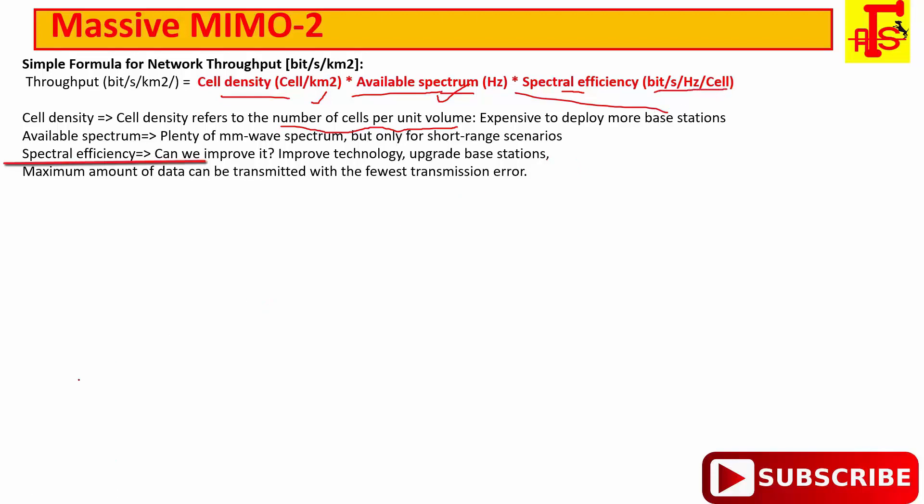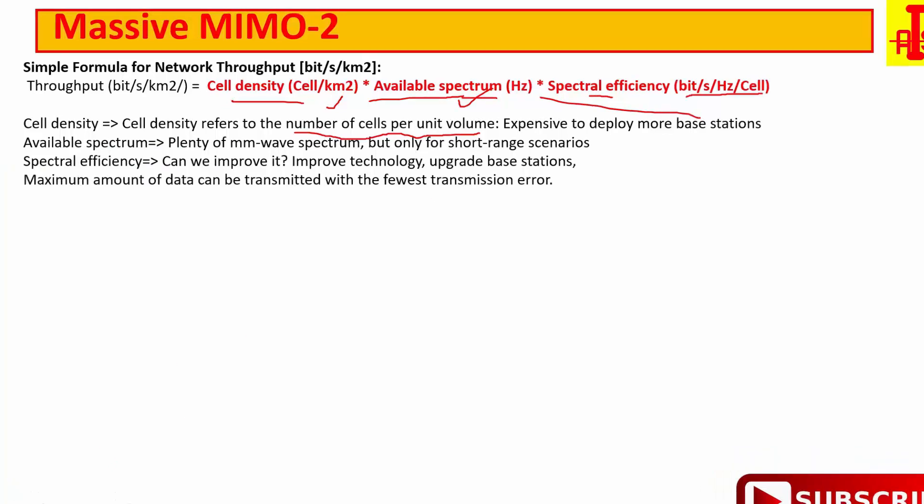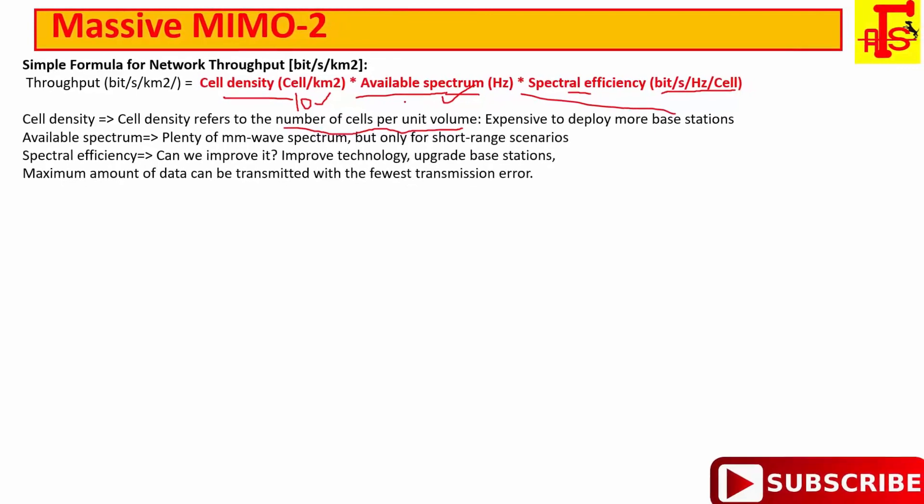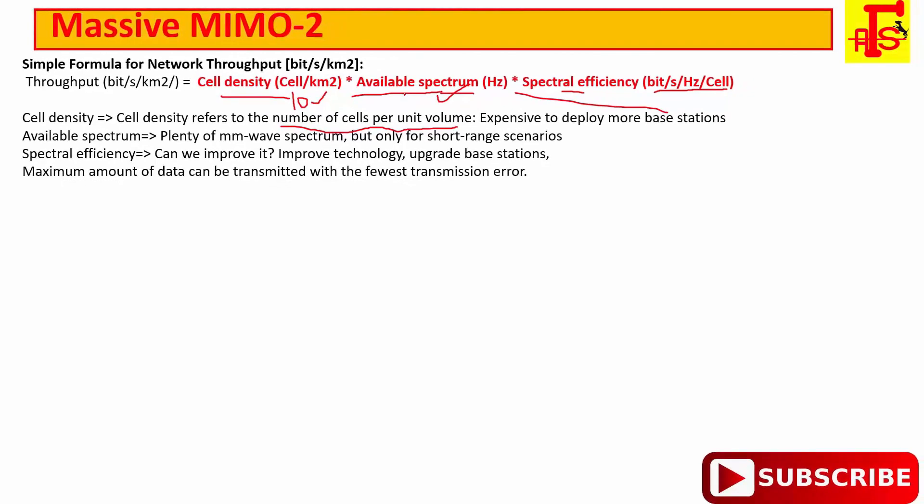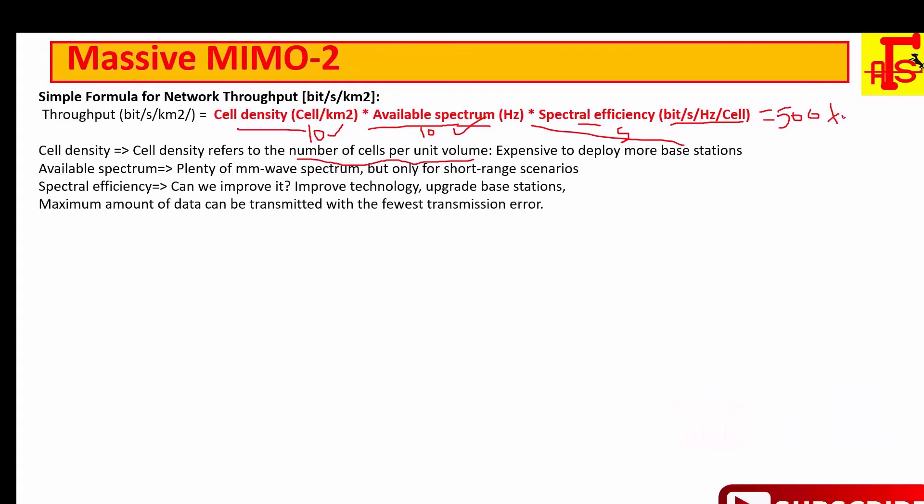Next is spectrum efficiency, bit per second per hertz per user. If number of antennas will increase, spectral efficiency also will increase. As per this formula, if we calculate the throughput in 5G, if suppose that available spectrum is increased by 10 times and the cell density will also be increased by 10 times and the spectral efficiency is increased by 5 times, then network throughput will be increased by 500 times.